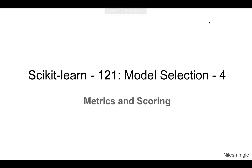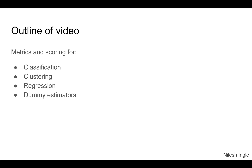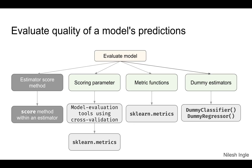Hello and welcome to Learn Data. In this continuing series on model selection, we are going to look at metrics and scoring. This is going to be a pretty long video, so I'll try to cut it into three or four smaller videos. These are the topics we'll cover: how to quantify and evaluate models created using classification, clustering, and regression — what metrics and scoring methods we can use — and then we'll look at some dummy estimator functionality that scikit-learn provides.